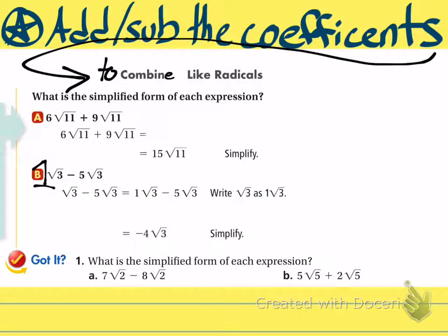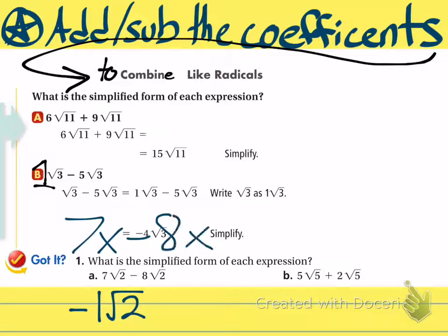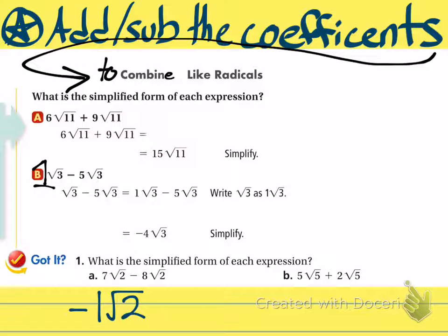Question A says 7 radical 2 minus 8 radical 2. You just have to do 7 minus 8 and you get negative 1, then the radical 2 part is the like radical. It's like saying 7x minus 8x — both terms have a radical 2 so they are like radicals. You don't need to write the negative 1 as part of your final answer; it's perfectly fine to leave it as just negative radical 2. Part B: 5 plus 2 is 7, and the radical 5 just tags along — that's your answer.